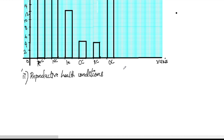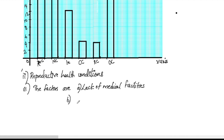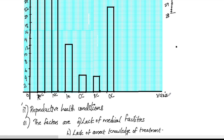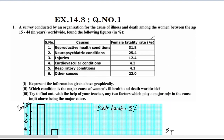We will discuss two factors: medical facilities and health and death. The bar graph is very simple to interpret for this question.